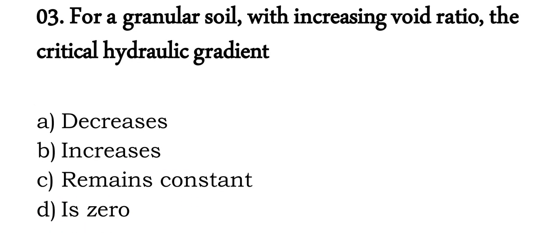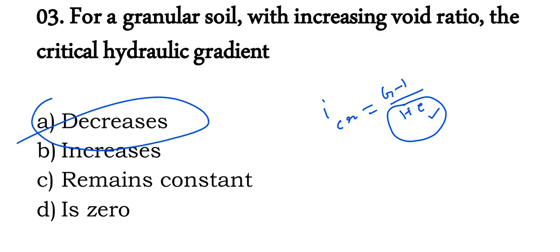Question 3: for a granular soil, with increasing void ratio, the critical hydraulic gradient — does it increase or decrease? Since I_critical equals (G − 1)/(1 + E), if you increase the void ratio E, the denominator increases, so this value becomes smaller. Therefore, the critical hydraulic gradient decreases.